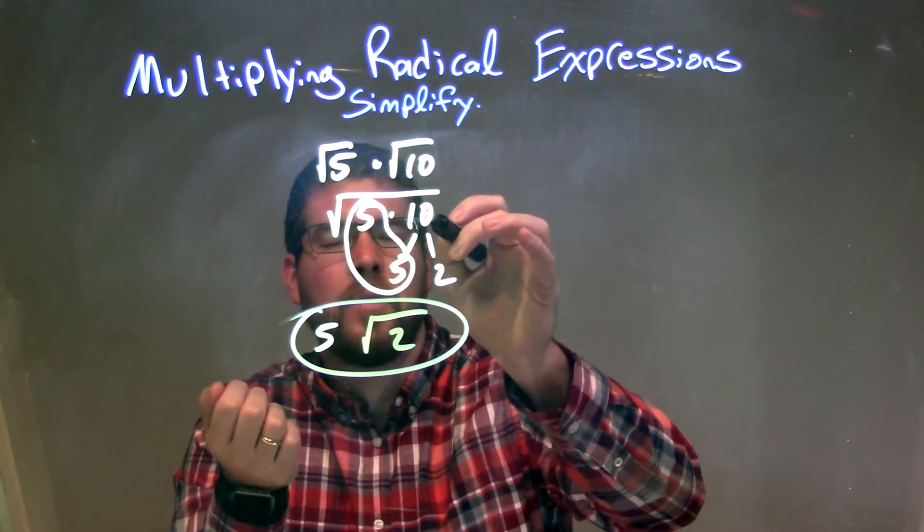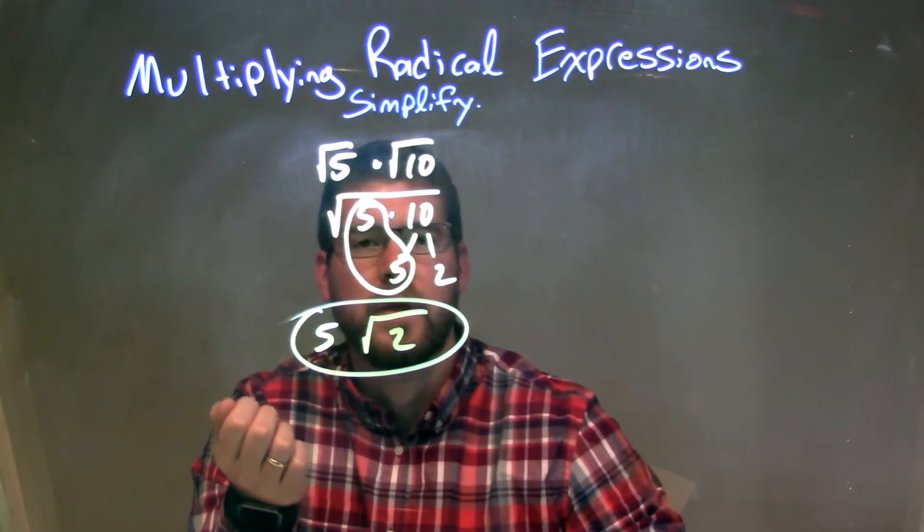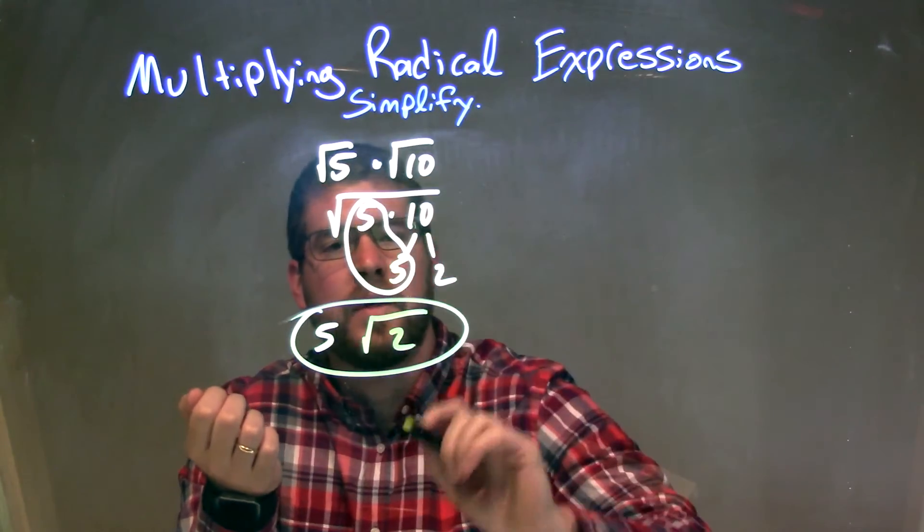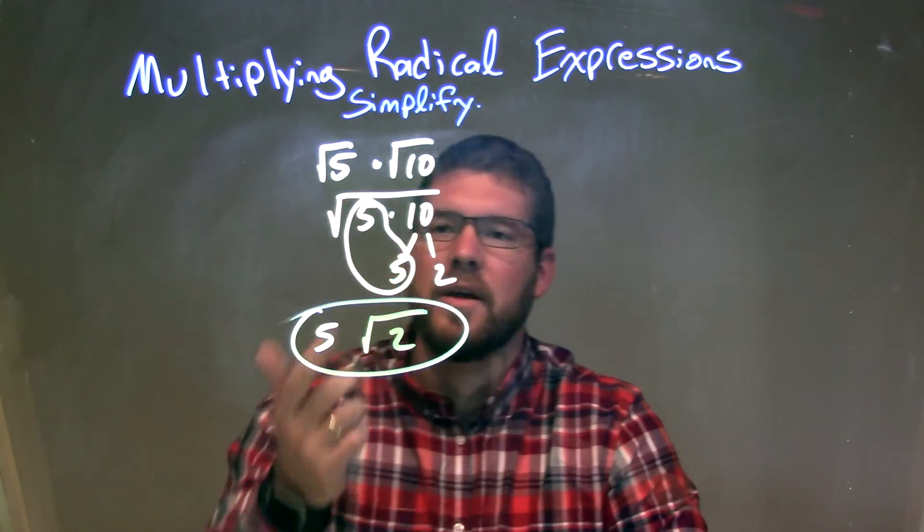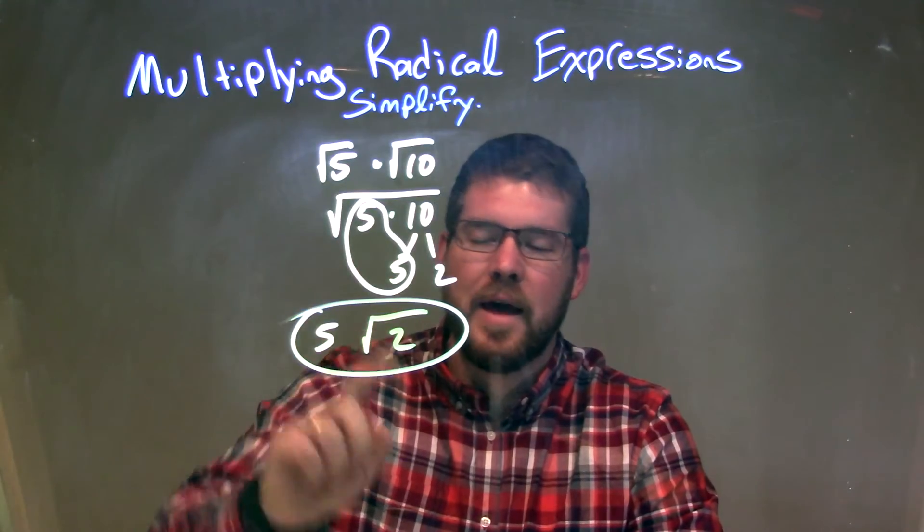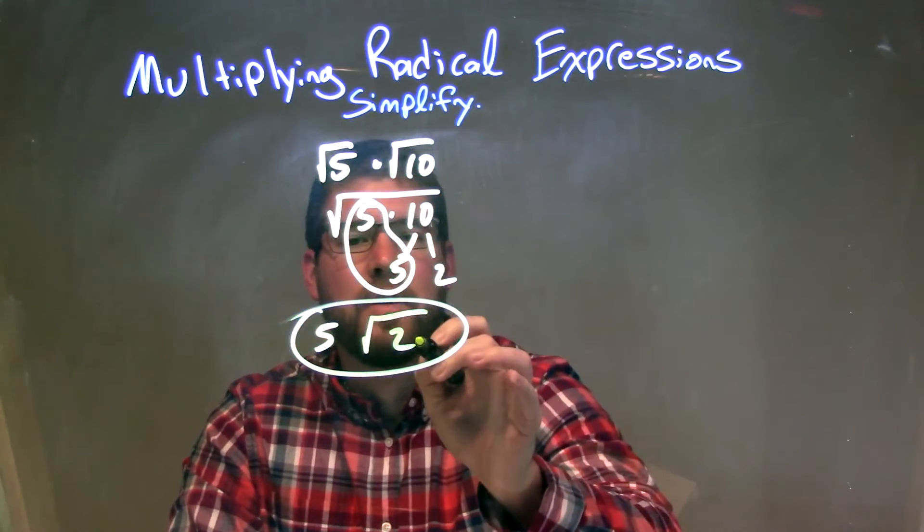Then I break this down. Well, 5 can't break down anymore, but 10 could be broken down into 5 times 2. I circle my pair of 5s right there. I put a single on the outside. The pair of 5s represents a single on the outside, and the 2 is just left over on the inside of the square root.